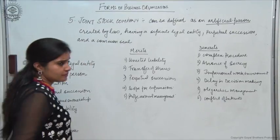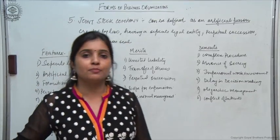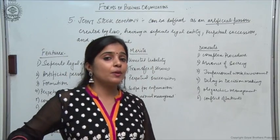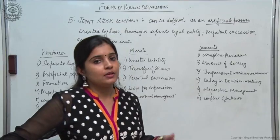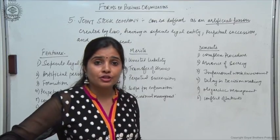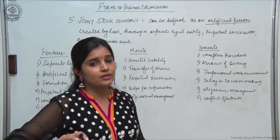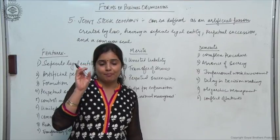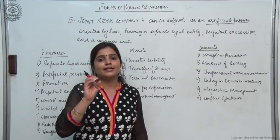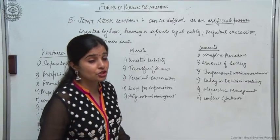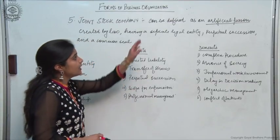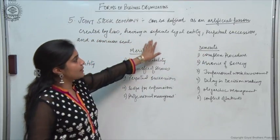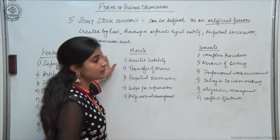And a common seal: since the company is an artificial person capable of entering into contracts, signing contracts, capable of suing people and being sued, but because it is an artificial person it cannot sign contracts on its own. So the official signature of the company in the form of a stamp is called a common seal. The definition of a company: an artificial person created by law, having a separate legal entity, perpetual succession, and a common seal.